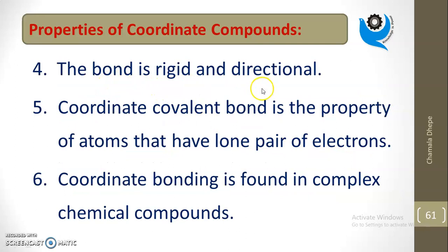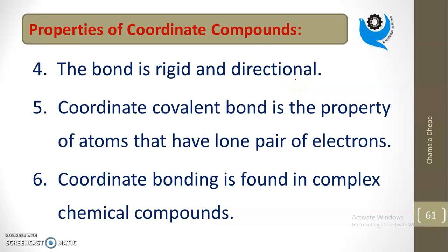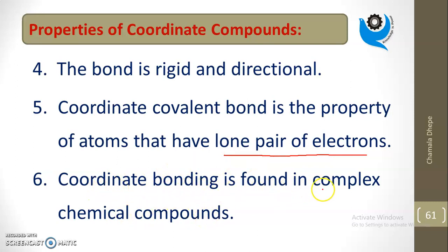Fourth, coordinate bonds are rigid and directional, like covalent bonds — unlike electrovalent (ionic) bonds which are non-directional and extend in all directions. Always remember: this bond involves a lone pair of electrons; the atom bearing the lone pair acts as donor, the other as acceptor. Coordinate bonding is found in complex chemical compounds. These are the main properties of coordinate compounds.